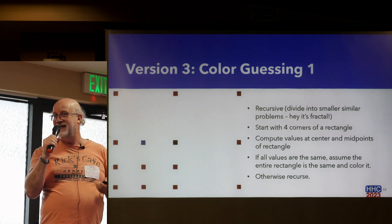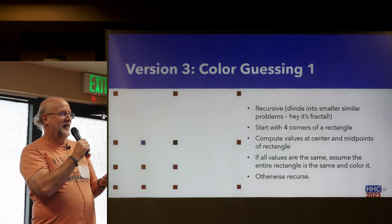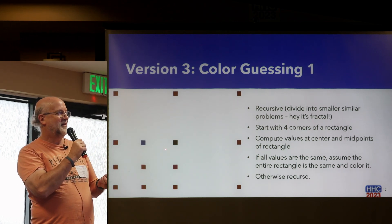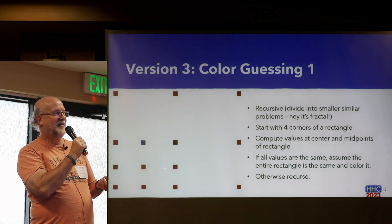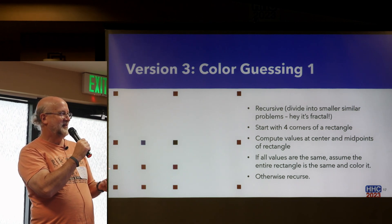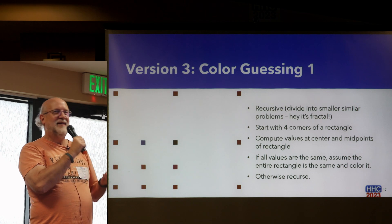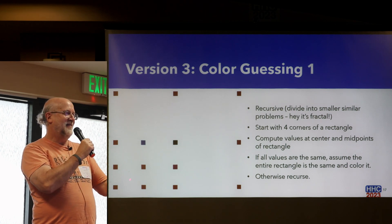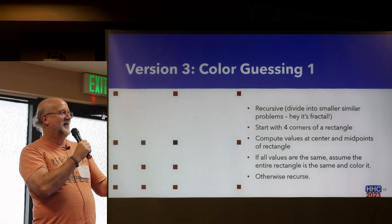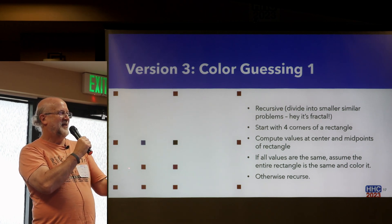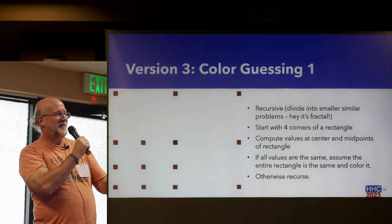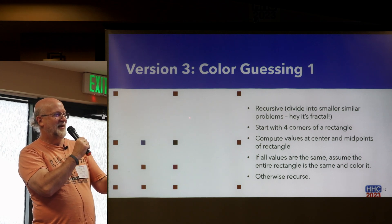If the values are different anywhere, then I recurse — I divide into sub-rectangles and do the same thing: fill in north, south, east, west, and center, check if they're the same, and if not, keep going down and down. Let's watch that in action.